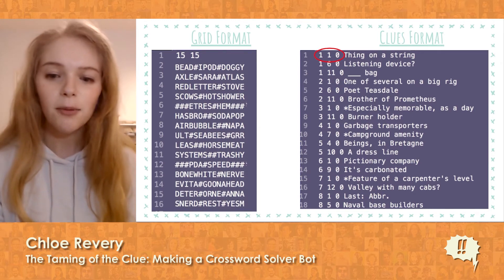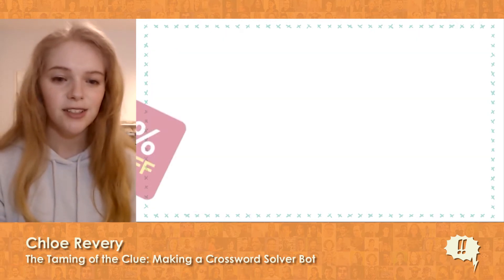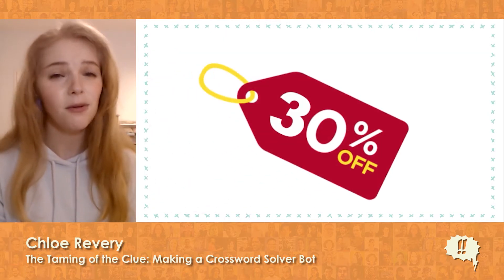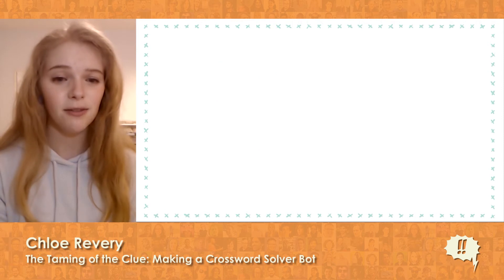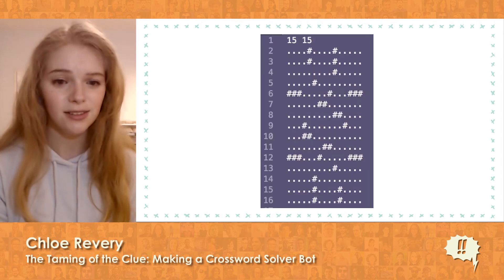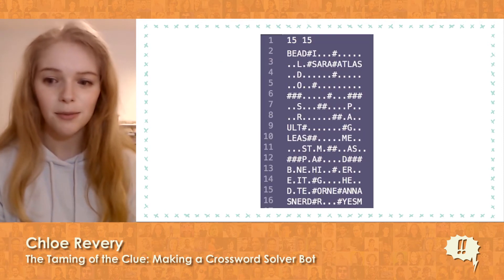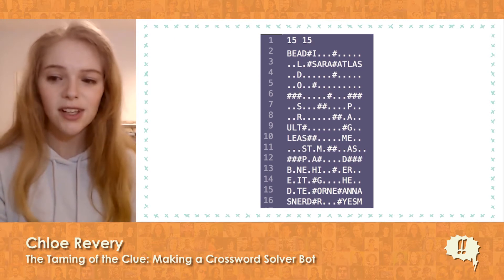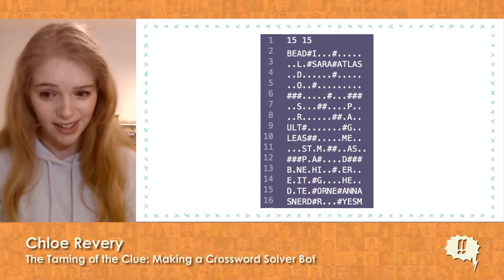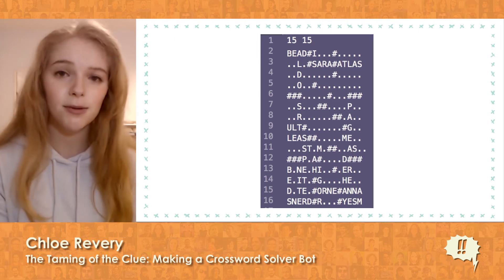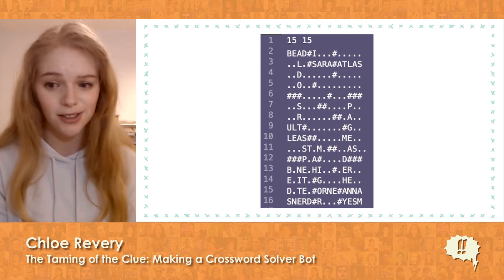So how much of the puzzle can be solved through this approach? Turns out to be a whopping 30%. So our puzzle has gone from this to this. Much better. But we still have to solve the other 70%, and that means we're going to need a way to generate answers for the remaining clues.